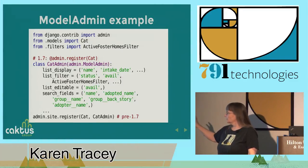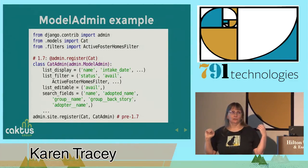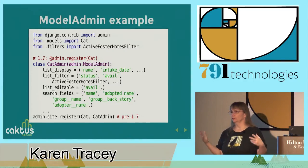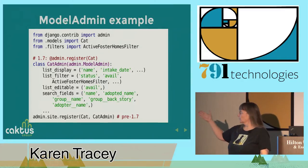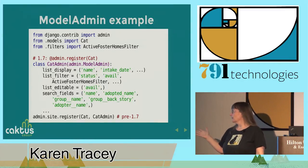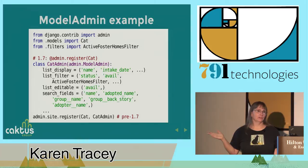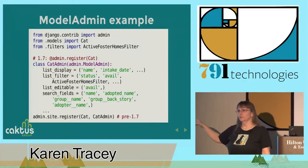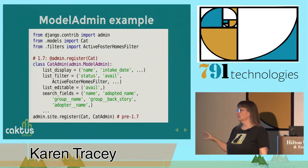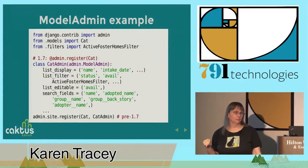The first four things I'm going to focus on are controlling how you see data — what you see about a list of cats and how you can filter and search on cats. I'll talk about list_display, list_filter, list_editable, and search_fields. Most of them are tuples or sequences of strings, though some of them can be code, like the active foster homes filter, which we'll talk about more.